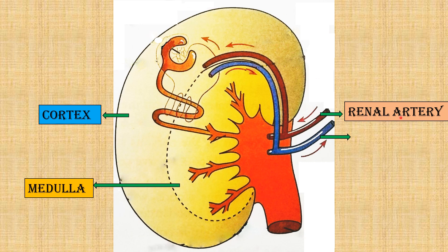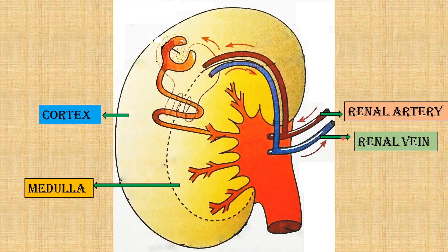The renal artery brings the dirty blood to the kidney for filtration, and the renal vein carries the clean blood away from the kidney.